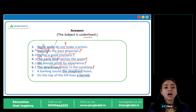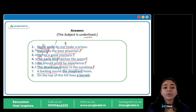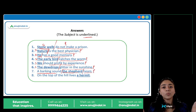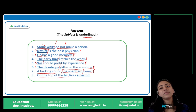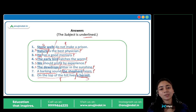Now, see the last two sentences. 'A barking sound the shepherd hears.' The first part, 'a barking sound' — is it naming something? Is it introducing us to someone? There is no person here — so it is not the subject. 'The shepherd' — this is our subject. And 'a barking sound hears' is our predicate. So in this sentence the predicate came first and the subject came after. I hope the subject and predicate concept is clear.